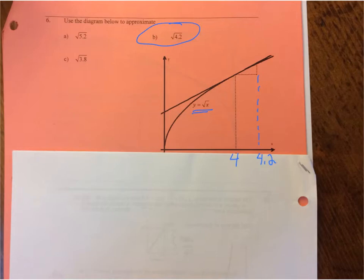So I know what the square root of 4 is. The square root of 4 is 2. What we're asked to find is the y value, what's the square root of 4.2?